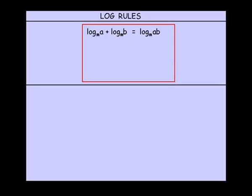Firstly, the log rules. The first log rule is that log of A plus log of B is equal to log of A times B. We must make sure that we have a consistent base. In this case, we've got log to the base m.